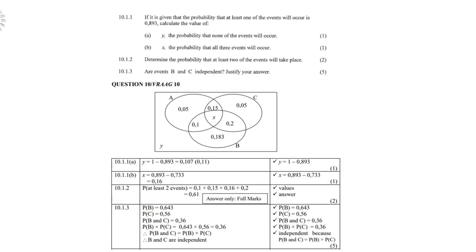Let's look at 10.11 then. If it is given that the probability that at least one of the events will occur is 0.893, calculate the value of Y. Remember, probabilities always add up to 1 — you must never forget that. So if the probability of at least one event is 0.893, then Y should be 1 minus 0.893, which is 0.107.